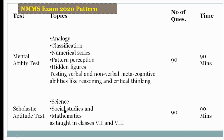In the Scholastic Aptitude Test, subjects include science, social, and mathematics starting from classes 7th and 8th. This section also has 90 questions and 90 marks, making the total NMMS exam 180 questions and 180 marks.